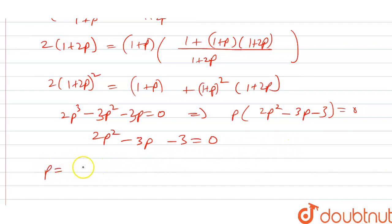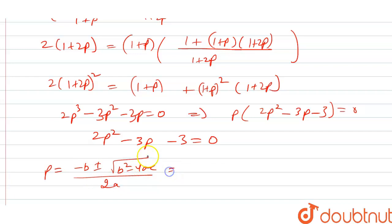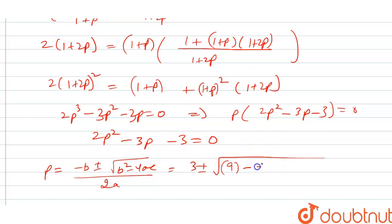Using the quadratic formula, P = (−b ± √(b² − 4ac)) / 2a, with a=2, b=−3, c=−3: P = (3 ± √(9 + 24)) / 4 = (3 ± √33) / 4.